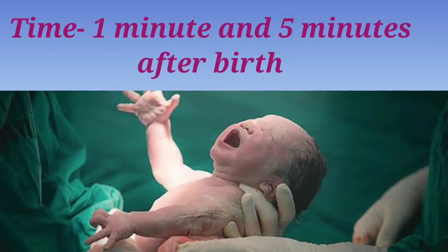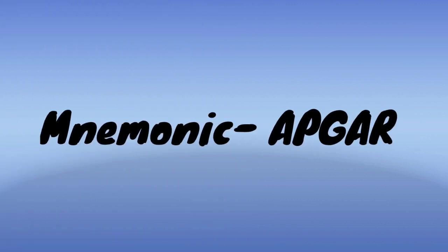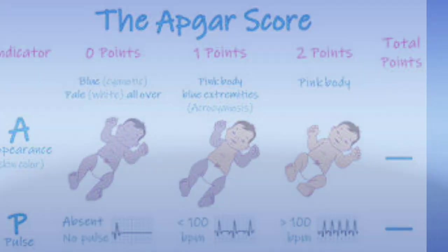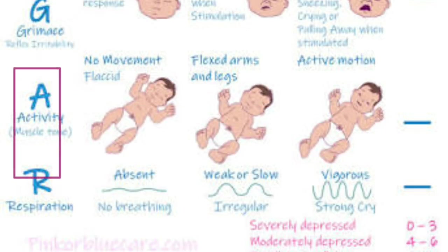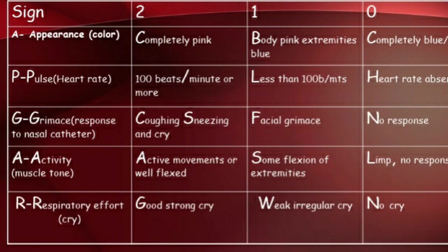Evaluations are made at one and five minutes after birth and may be repeated until the condition stabilizes. This scoring system was developed by Dr. Virginia Apgar in 1952, and her name is used as a mnemonic for each of the five parameters: A for Appearance, P for Pulse rate, G for Grimace, A for Activity, and R for Respiratory effort.